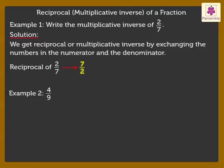4 upon 9 multiplied by what gives 1? We know that when a fraction is multiplied by its Reciprocal, the product obtained is 1.